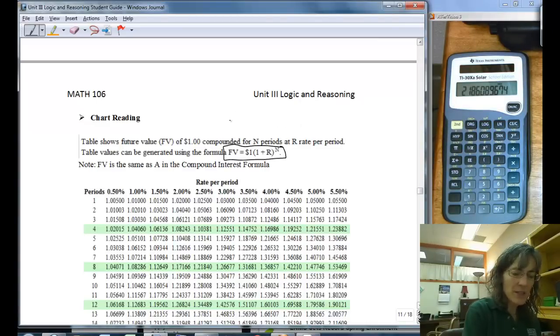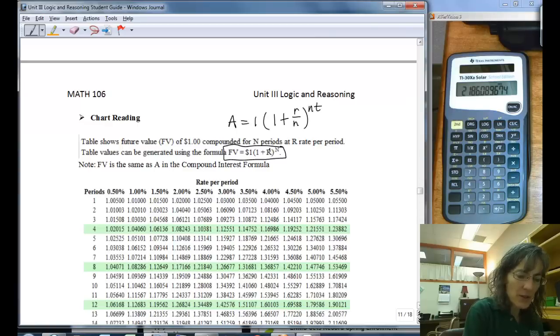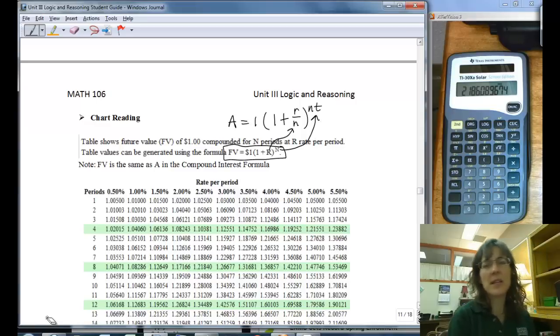FV is the same thing as future value, it's the same thing as our A, and we're just putting in $1 and 1 plus r over n raised to the nt. The big R here is the same thing as that fraction, and the big N is the same thing as the nt. So we've just rewritten our formula a little bit, but we have to calculate two little pieces first.